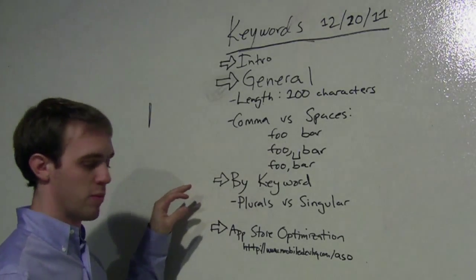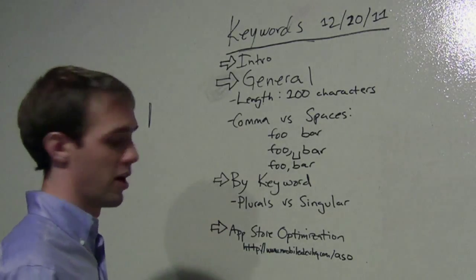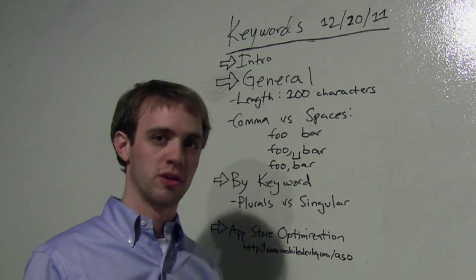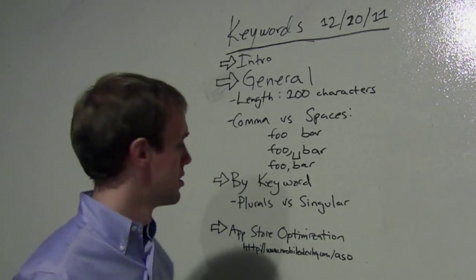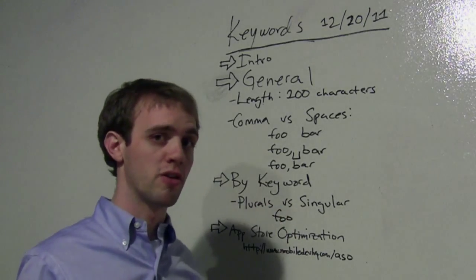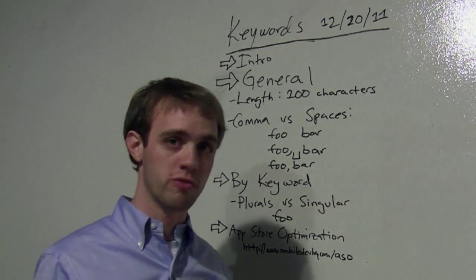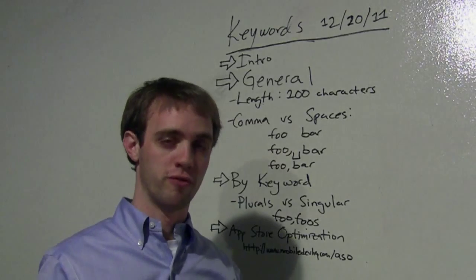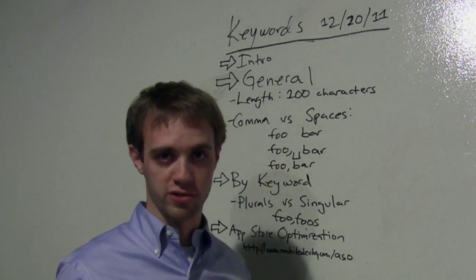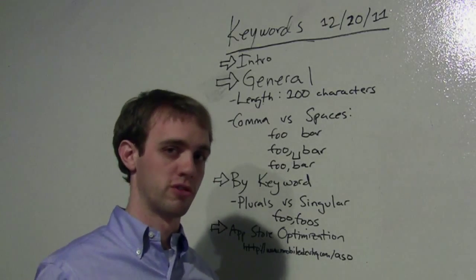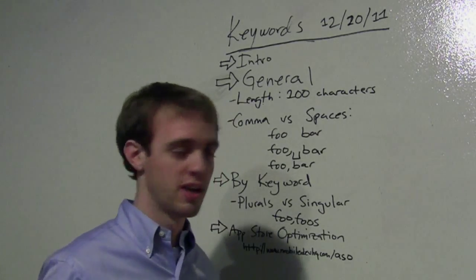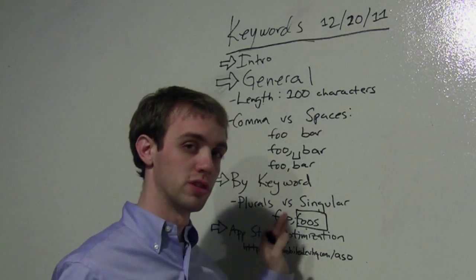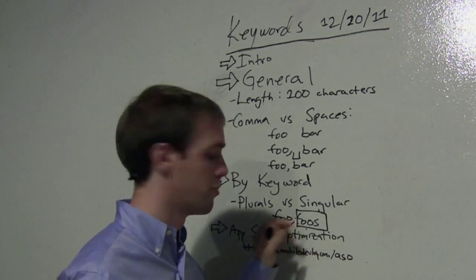The next thing is around a specific keyword — let's talk about foo. Apple does a really poor job of understanding stemming and plurals versus singulars. If I have foo, I may or may not rank for foo, but I certainly won't rank for foos. But if I have foo comma foos, I'll explicitly rank for both. So whenever you have the ability, given the length restraints, you really do want both singular and plural in your keywords. If length doesn't allow it, I highly suggest going with the plural, as experimentation shows it tends to lead to the singular more often than the other way around.